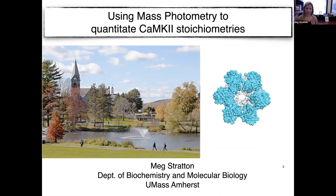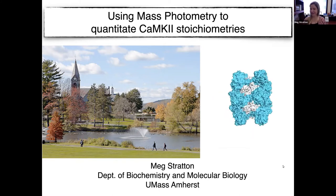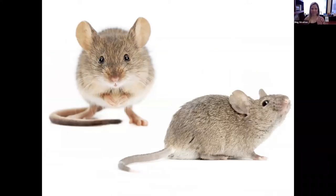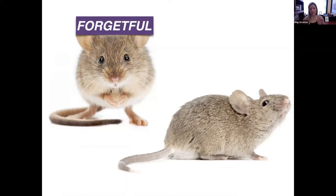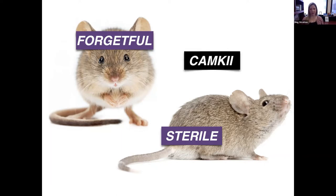I'm coming to you from UMass Amherst, which is out in the western part of Massachusetts. So I'm going to tell you how important CaMK2 is, and I think this is really exemplified by the fact that if you make mutations in CaMK2, you get these really striking phenotypes in mice and in humans. In these two mice, we have a forgetful phenotype and a sterile phenotype, and underlying both of these seemingly disparate phenotypes is a problem in the same enzyme — CaMKinase 2.